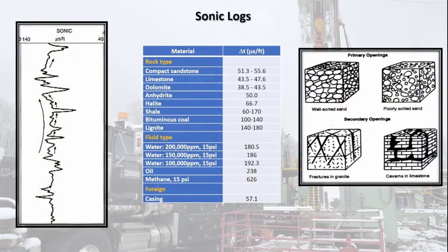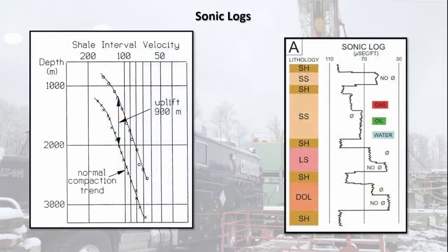Sonic logs record the time it takes for sonic waves to travel through the formation in units of microseconds per foot, with most ranging from 40 to 140 microseconds per foot. The interval travel times correspond to the set matrix to measure porosity. Estimations of average transit times for an uncompacted formation are listed in the table shown. For standard formations, the transit time increases with increased intergranular porosity, but this does not reflect secondary porosity. In unconsolidated sediments, this instrument requires compaction correction to give true porosity values.